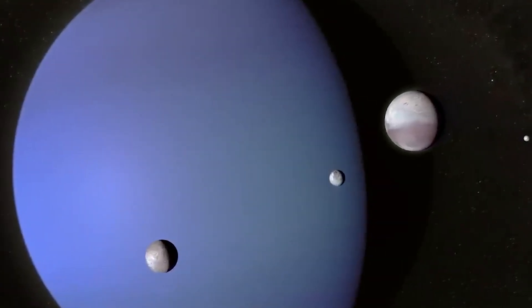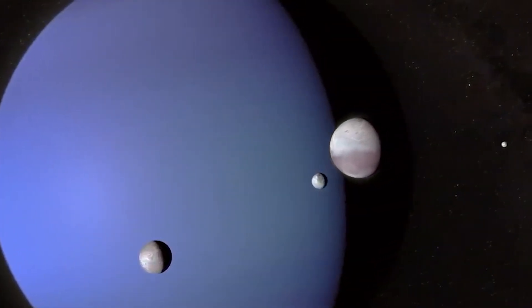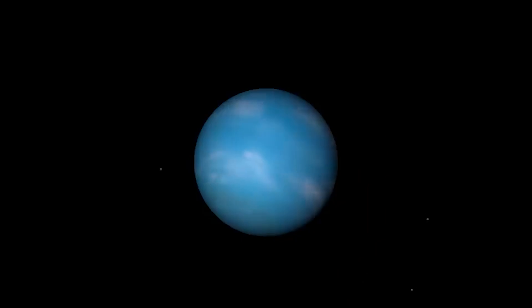Neptune plays a significant role in shaping the distant Kuiper Belt, a region beyond its orbit filled with icy objects, dwarf planets like Pluto, and countless comets.